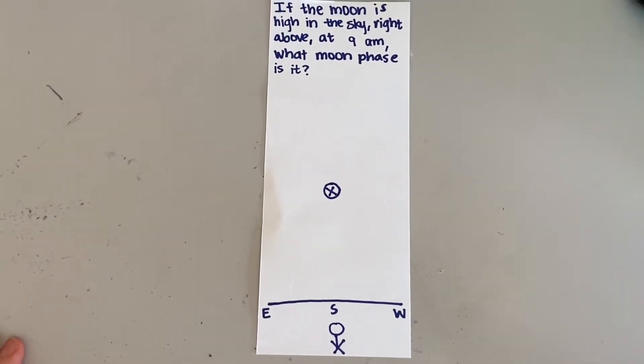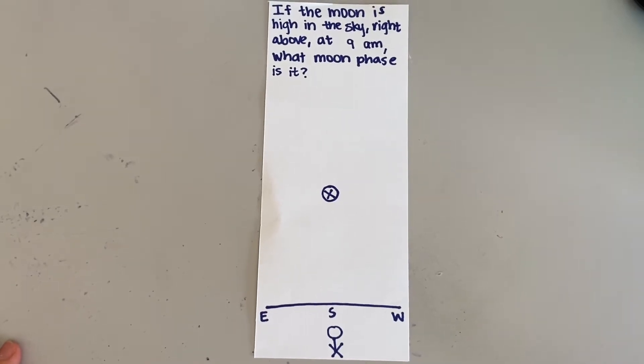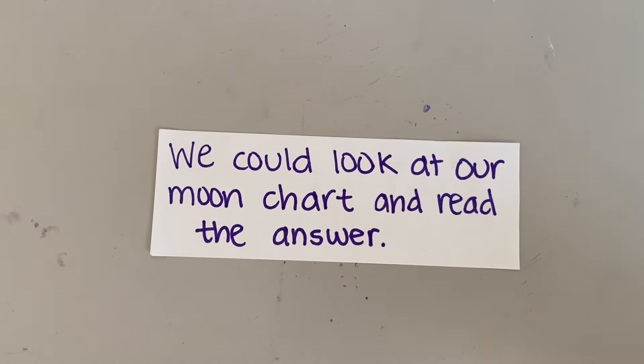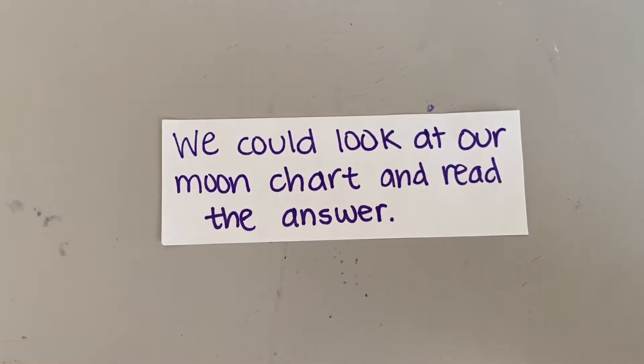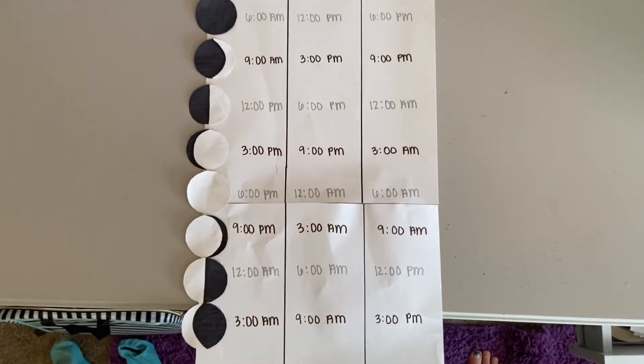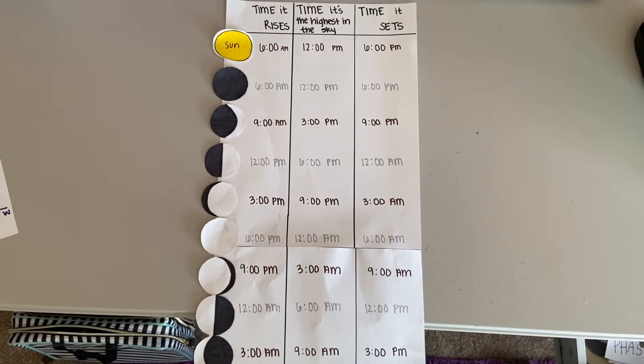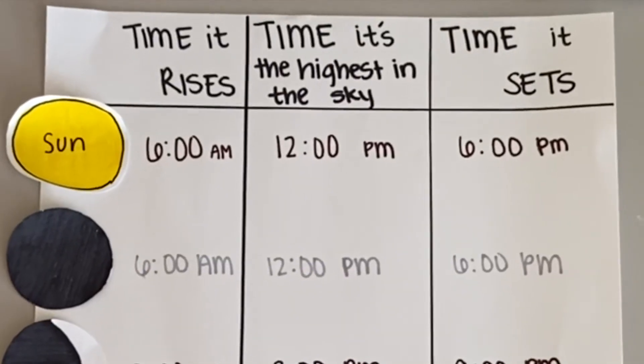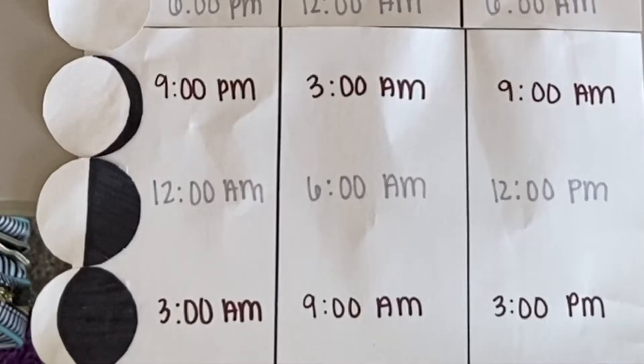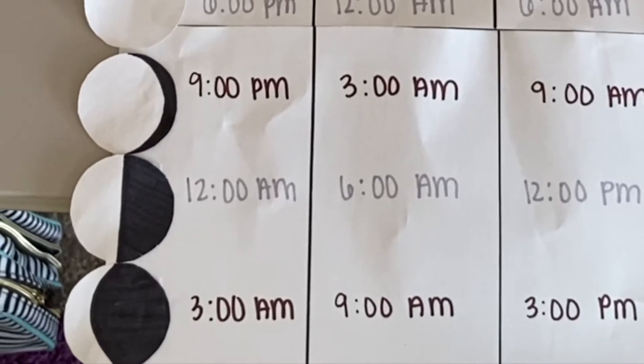We have two options of how we can solve this problem. Our first option is that we could look at our moon chart and read the answer. If we look in the middle column where it tells us where the moon is highest in the sky at what time, we can see that the waning crescent is highest in the sky at 9 a.m.